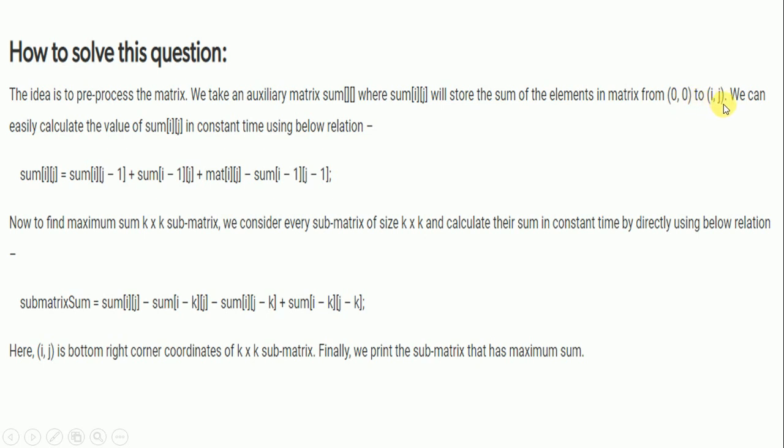We can easily calculate sum[i][j] in constant time by using the below relation: sum[i][j] = sum[i][j-1] + sum[i-1][j] + matrix[i][j] - sum[i-1][j-1].